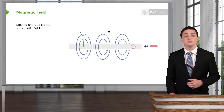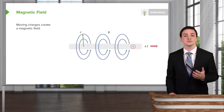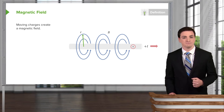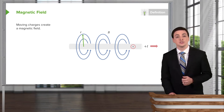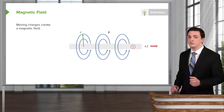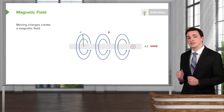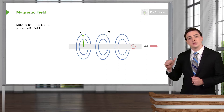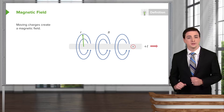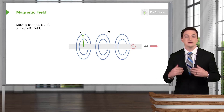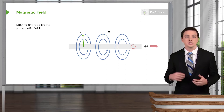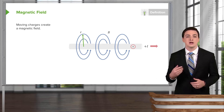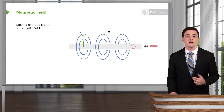Magnetic fields come from the motion of electric charges. So if we have a charge, for example, moving through a wire like this one, we have the current moving through the wire, and it creates a magnetic field in a circle around the entirety of the wire.